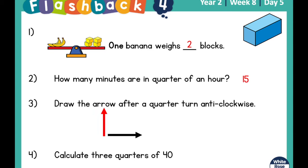And finally, question four: calculate three quarters of 40. The answer was 30. If you split 40 up into quarters — into four parts — you would have 10 in each part, and three of those parts give you 30.